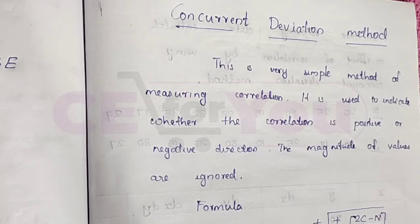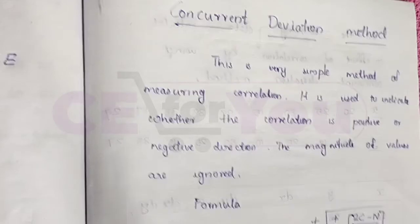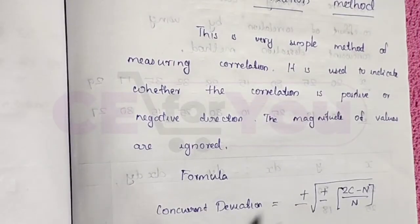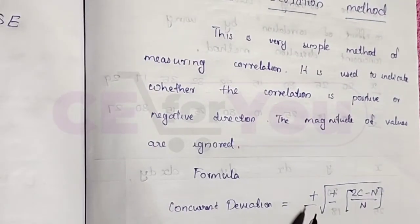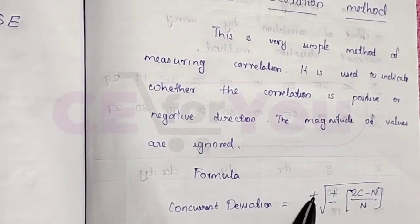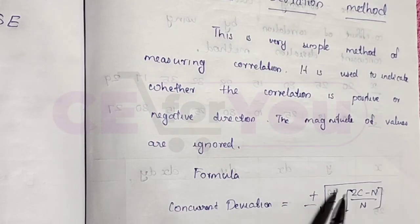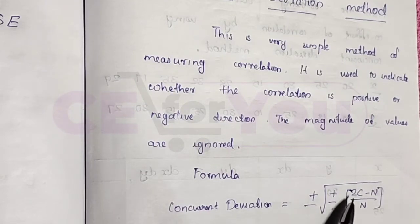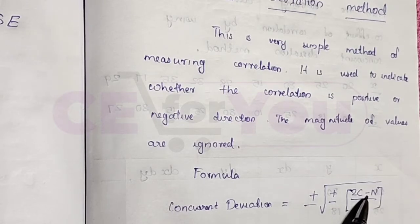Formally, the Concurrent Deviation Method formula is: r is equal to plus or minus root of plus or minus into (2c minus n) divided by n.